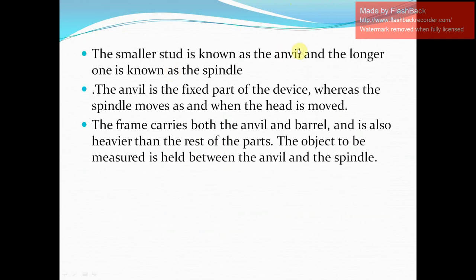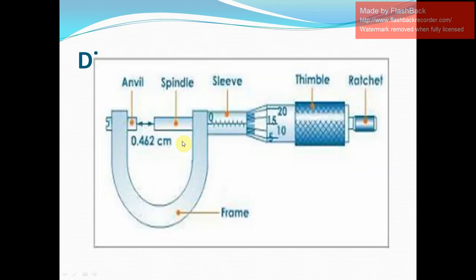The smaller stud is known as the anvil and the longer one is known as the spindle. The anvil is the fixed part of the device, whereas the spindle moves when the head is moved. The frame carries both the anvil and the barrel, and is heavier than the rest of the parts. The object to be measured is held between the anvil and the spindle.